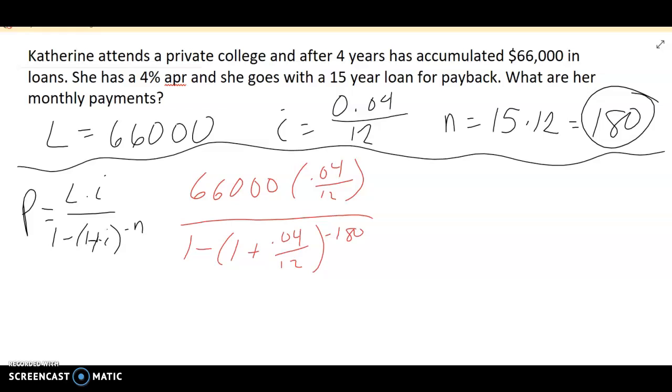Now, as we're simplifying, think of this as two separate pieces. We have the numerator, we have the denominator. When I simplify the numerator, 0.04 divided by 12 multiplied by 66,000, that comes out real nice. 220.